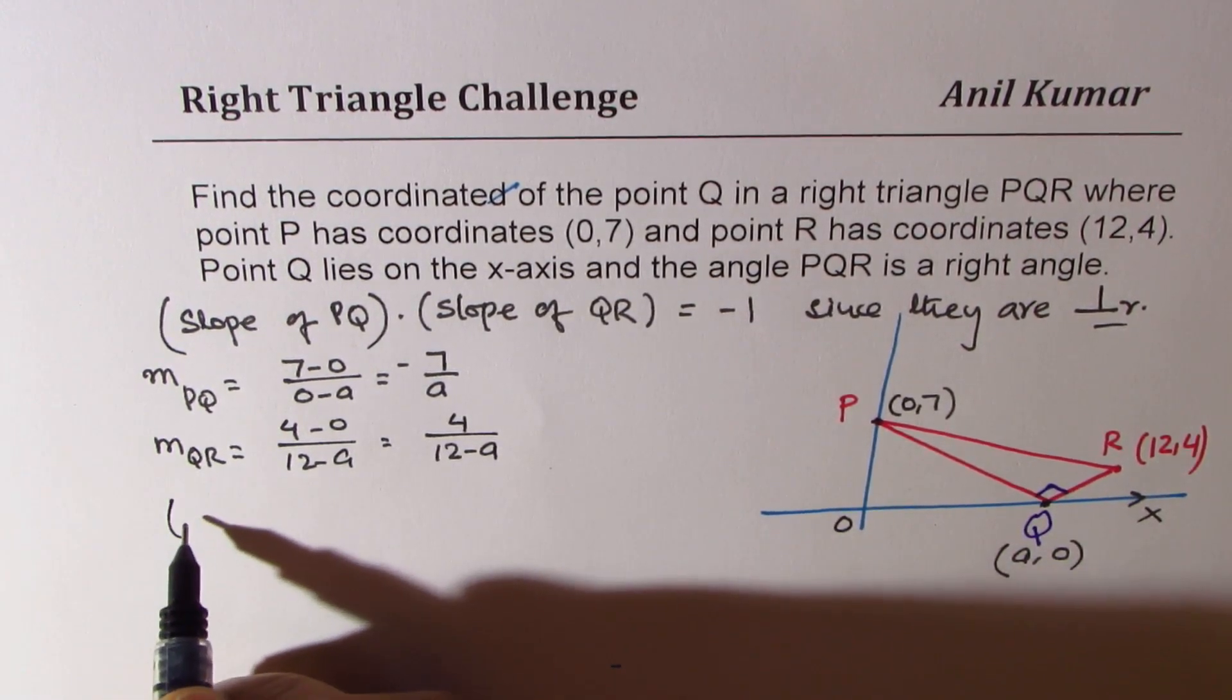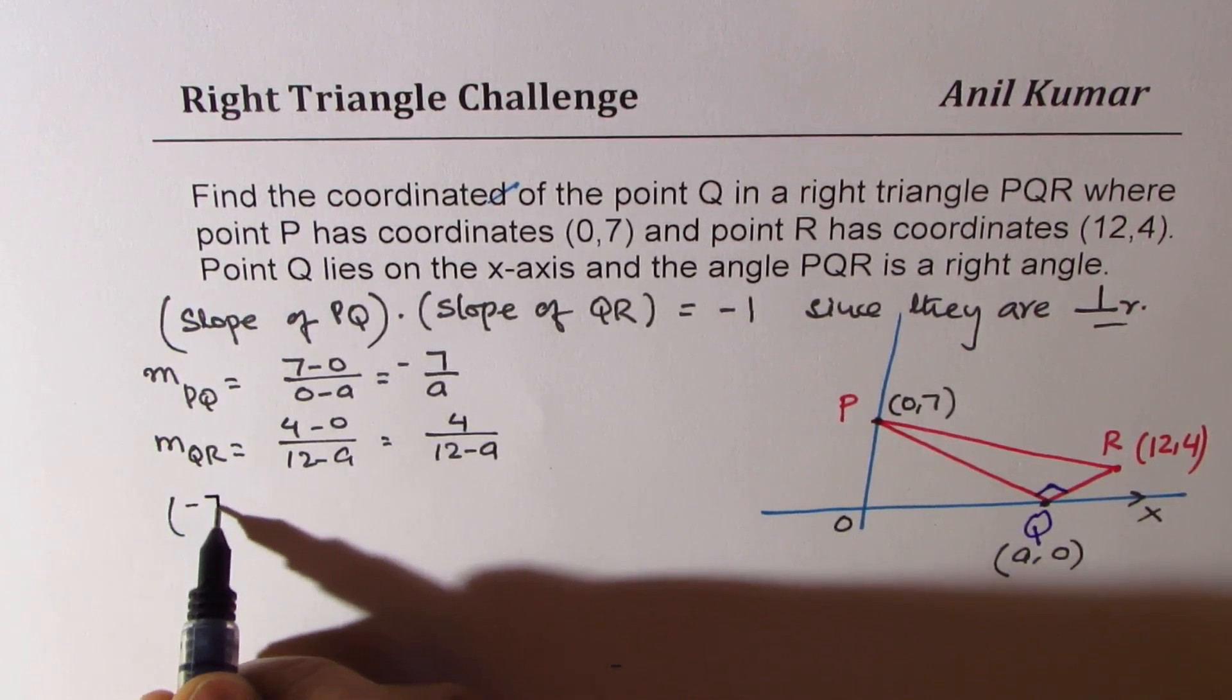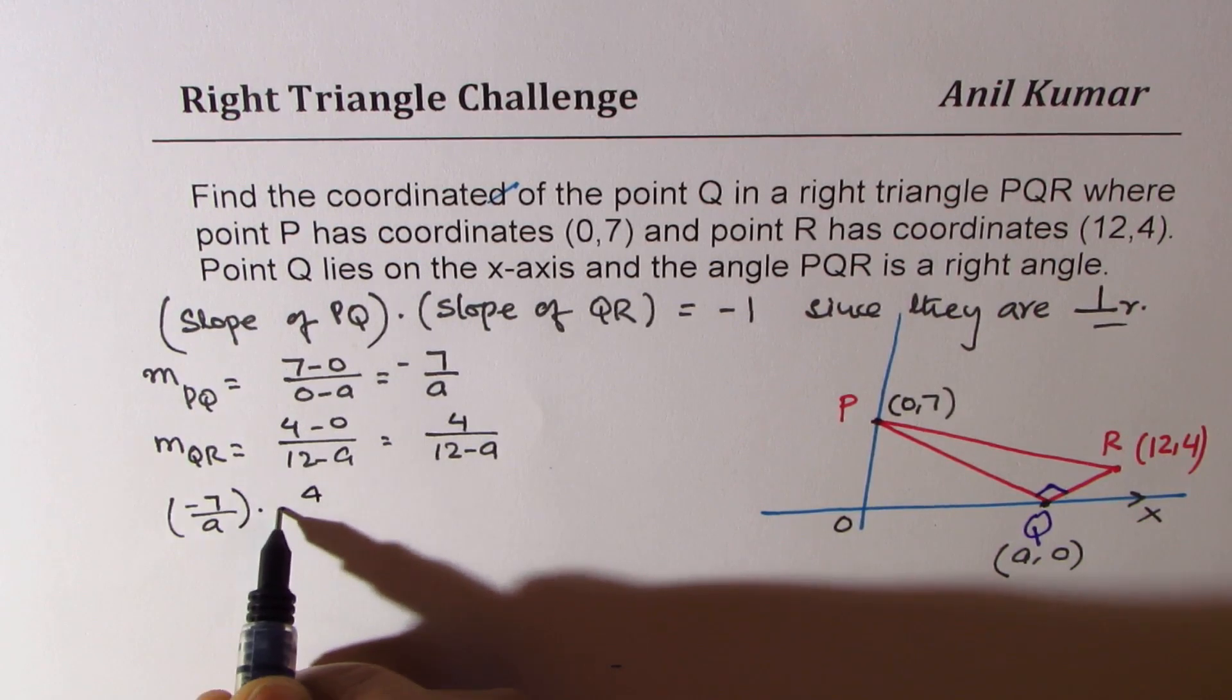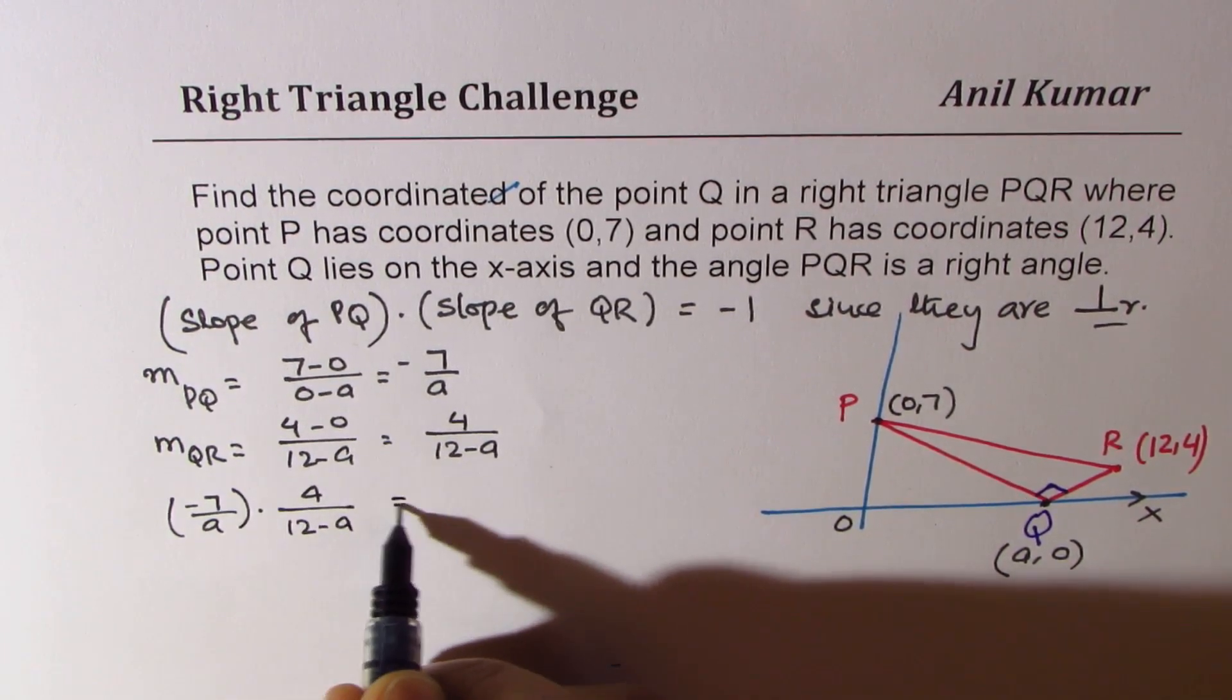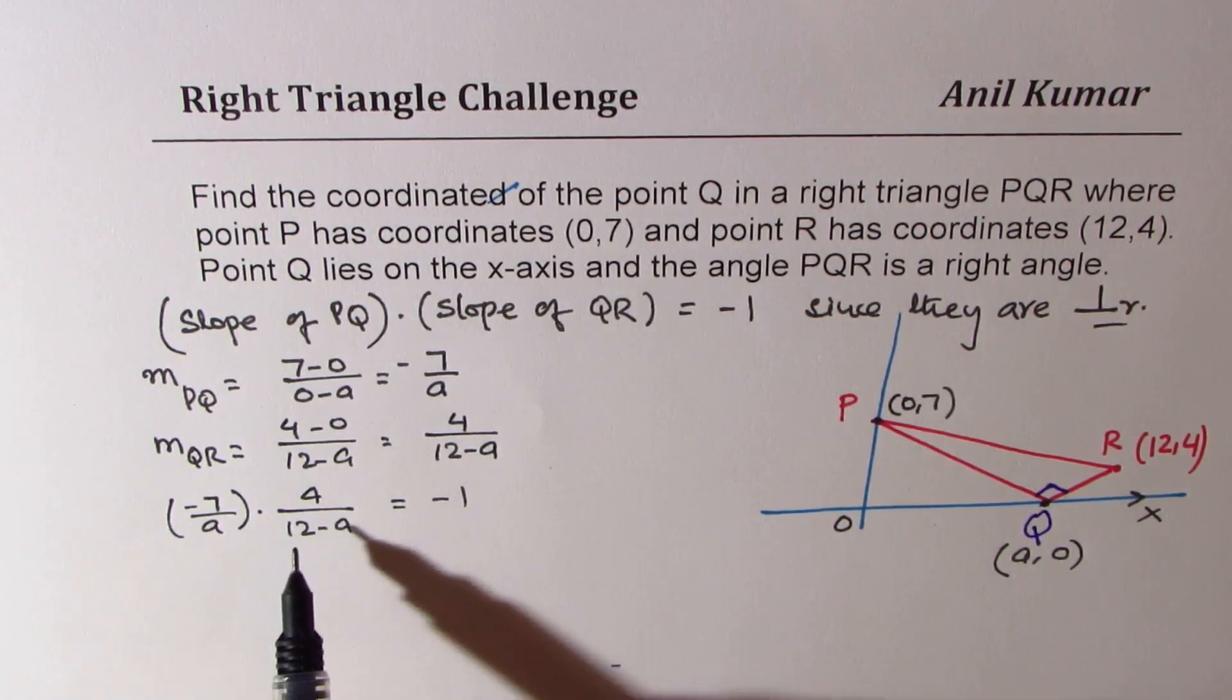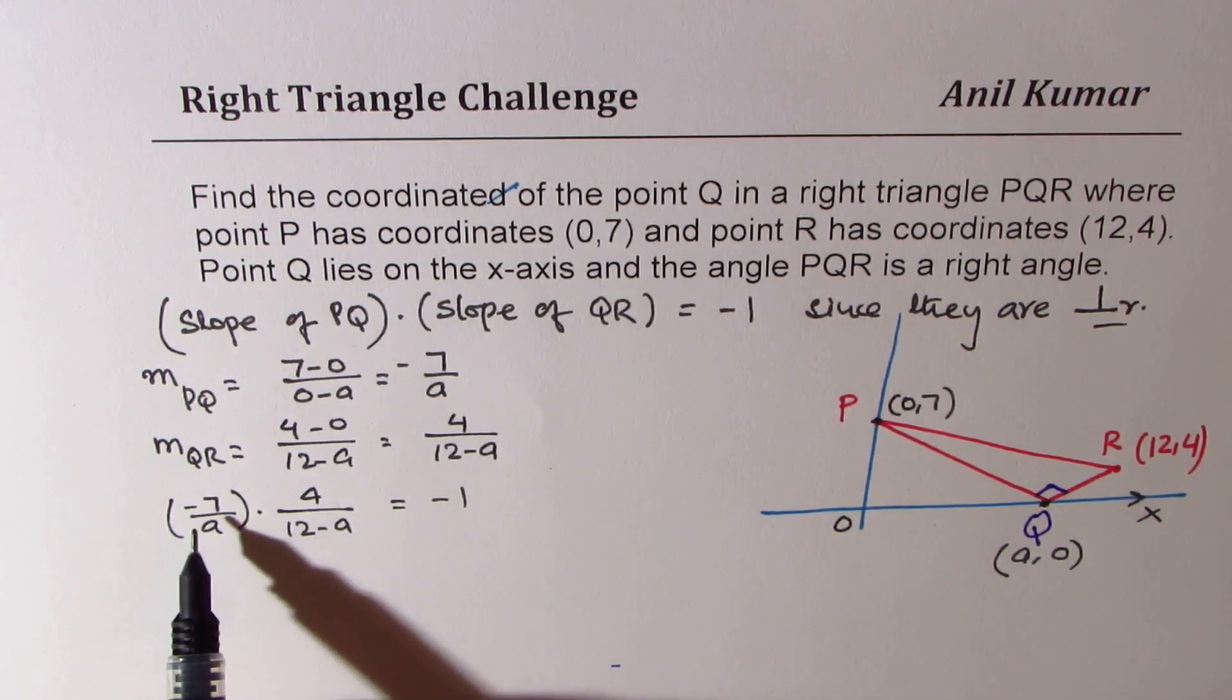Now their product should be negative 1. So we can write this as minus 7 over a times 4 over 12 minus a should be equal to negative 1. We can now cross multiply and solve.